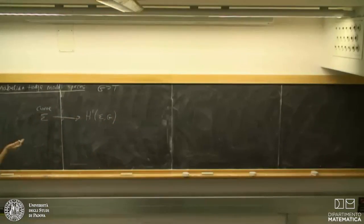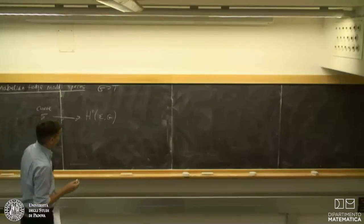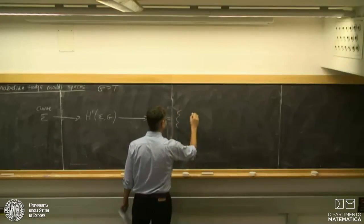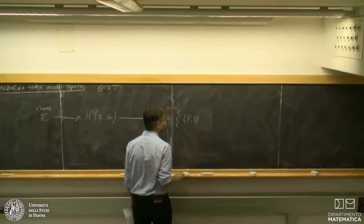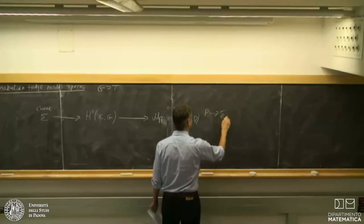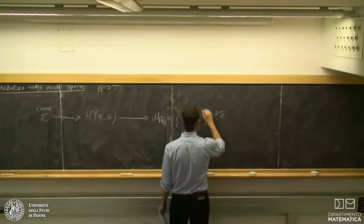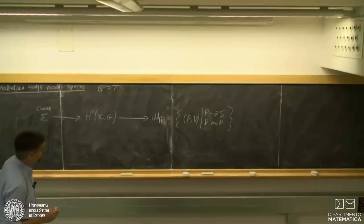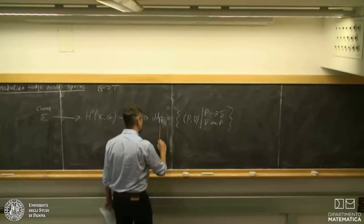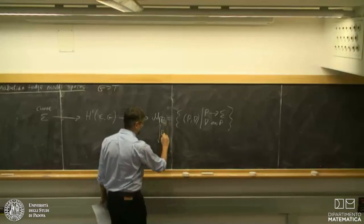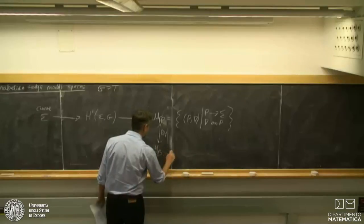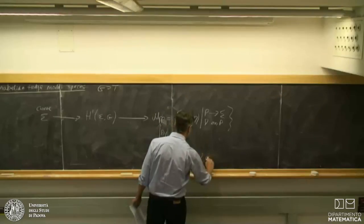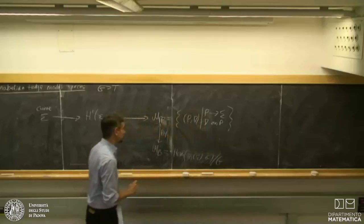From the De Rham perspective, we look at pairs (P, nabla) consisting of a principal G-bundle over our curve and an algebraic connection nabla on P. The Riemann-Hilbert correspondence gives an isomorphism with the Betti picture, where we look at the space of representations of the fundamental group of our curve up to overall conjugation.